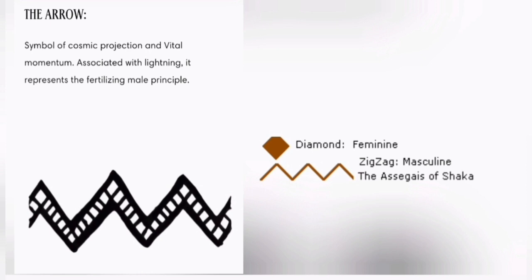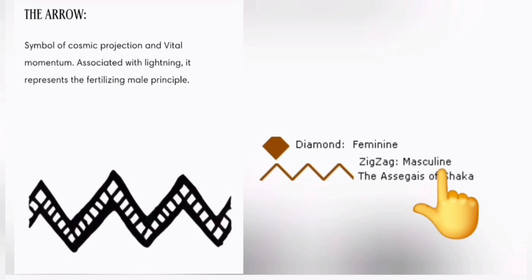An obvious similarity between these zigzag patterns is the fact that they're referred to as an arrow in Amazigh, and the Zulu one is referred to as an assegai, meaning a type of spear. So this zigzag shape represents a spear, but it also represents lightning — in both cultures, this represents lightning. And also you can see how it represents fertilizing the male principle. This zigzag represents masculine, and it also represents danger and other things like that in both cultures.